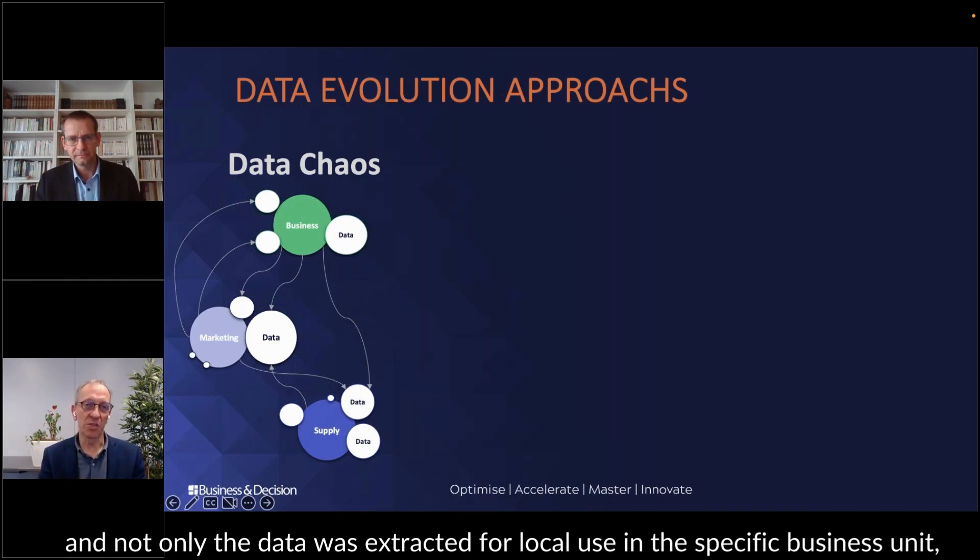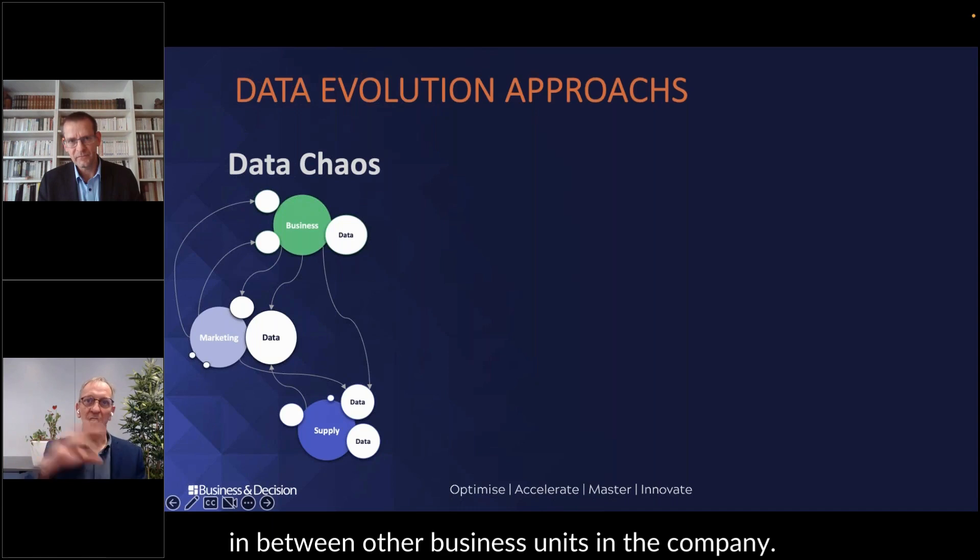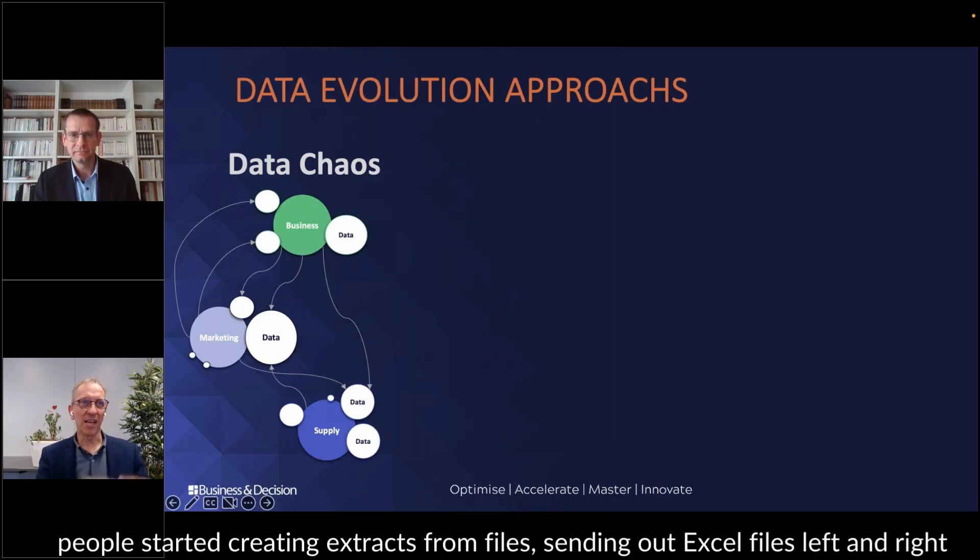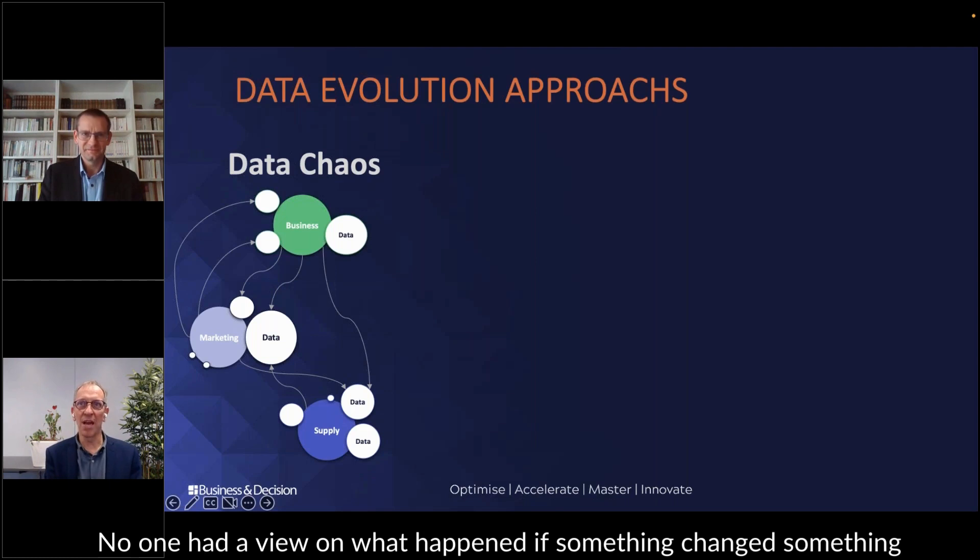Not only was data extracted for local use in the specific business unit it was deployed to, but also you saw very quickly that people started to interchange these documents, these data sets, between other business units in the company. It became what we typically call the Excel hell. People started creating extracts from files, sending out Excel files left and right through shared file systems or through emails. It was what we call data chaos. No one had a view on what happened. If something changed, no one could backtrace it and solve it.